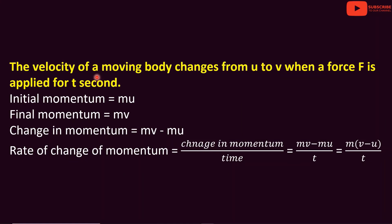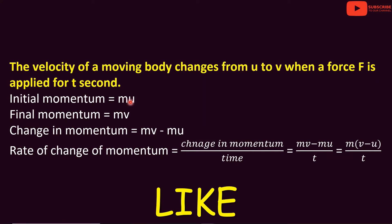The velocity of a moving body changes from u to v when a force f is applied for t seconds. The product of mass and velocity is momentum: P is equal to mass into velocity. The initial momentum of the body is mass into the initial velocity u. Therefore, the initial momentum is equal to m into u.